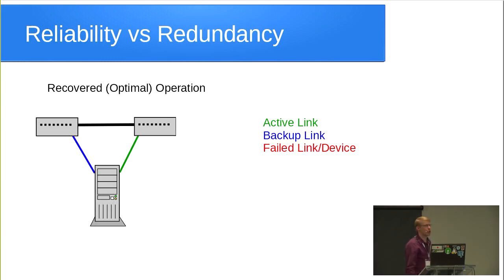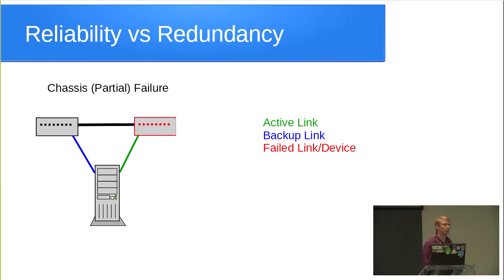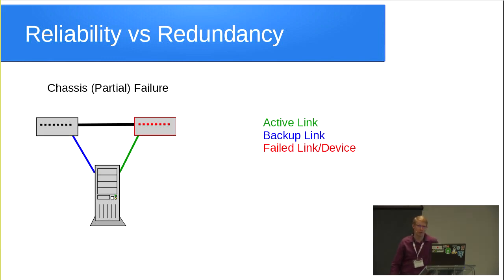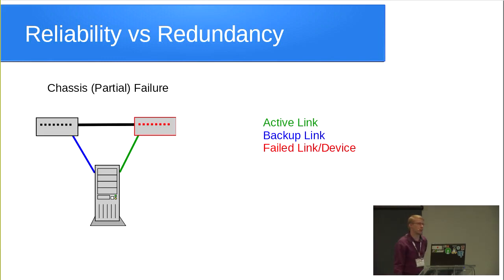Once we've repaired it, we're nice and optimal again. What gets more interesting is if we don't have a link failure but a switch failure where the link remains up. In that case we can end up in a situation where the switch is no longer switching packets — the link is up but the server is using the wrong switch. We're dead in the water unless we've got some kind of way to know we need to fail over, and standard bonding doesn't do that.